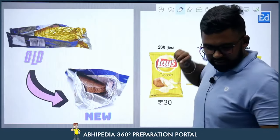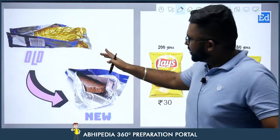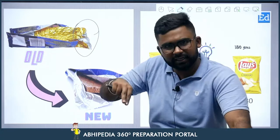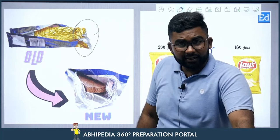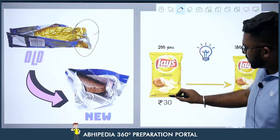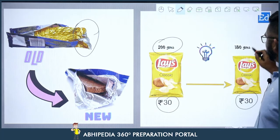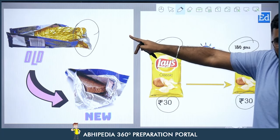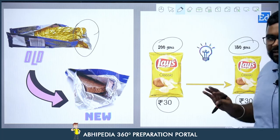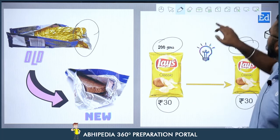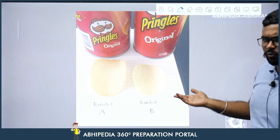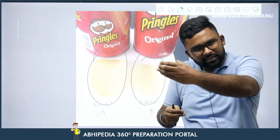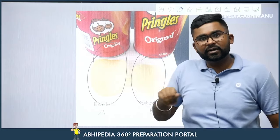Let's understand with some examples. With Cadbury or any chocolate, earlier it used to have foil packing — foil preserves the taste — but now it does not. Another example: earlier at 30 rupees you used to get 200 grams, now 30 rupees gives you only 180 grams. The packaging looks the same but the quantity inside has dropped. Even the box size stays the same in length but a marginal change reduces the chip size. This is how companies tackle the problem of inflation.